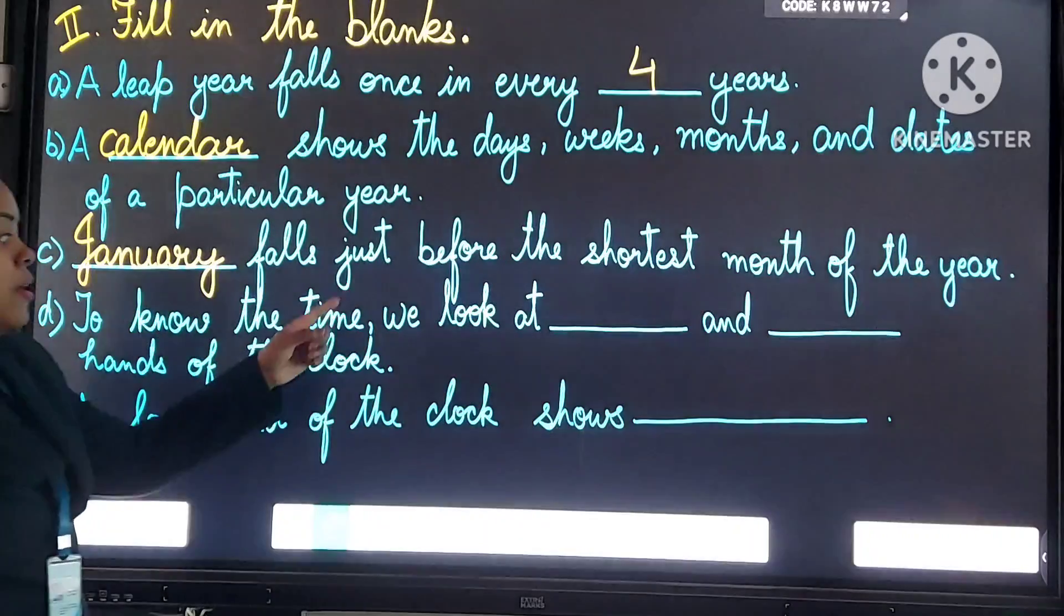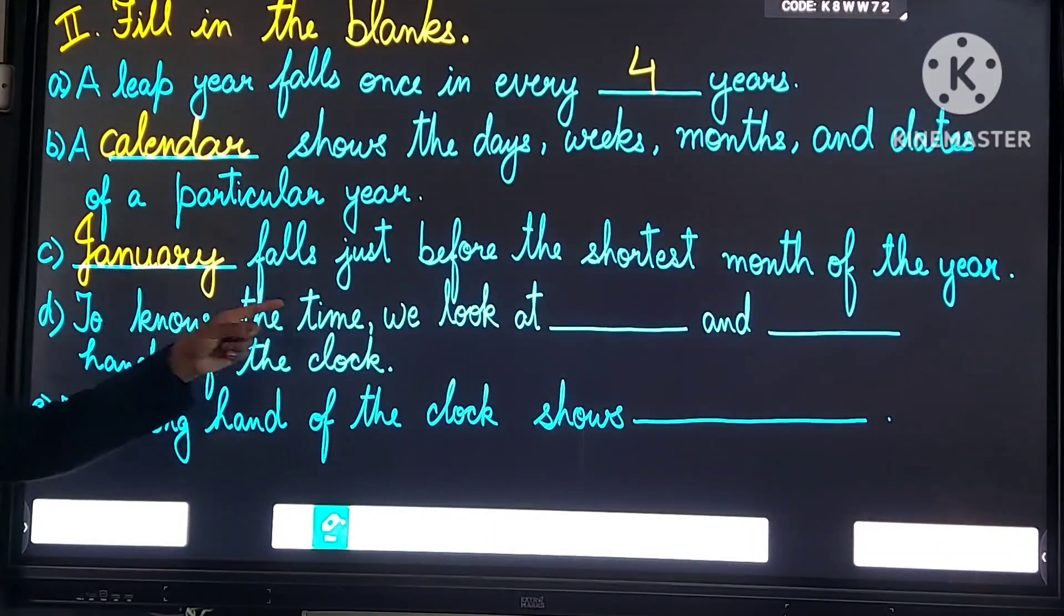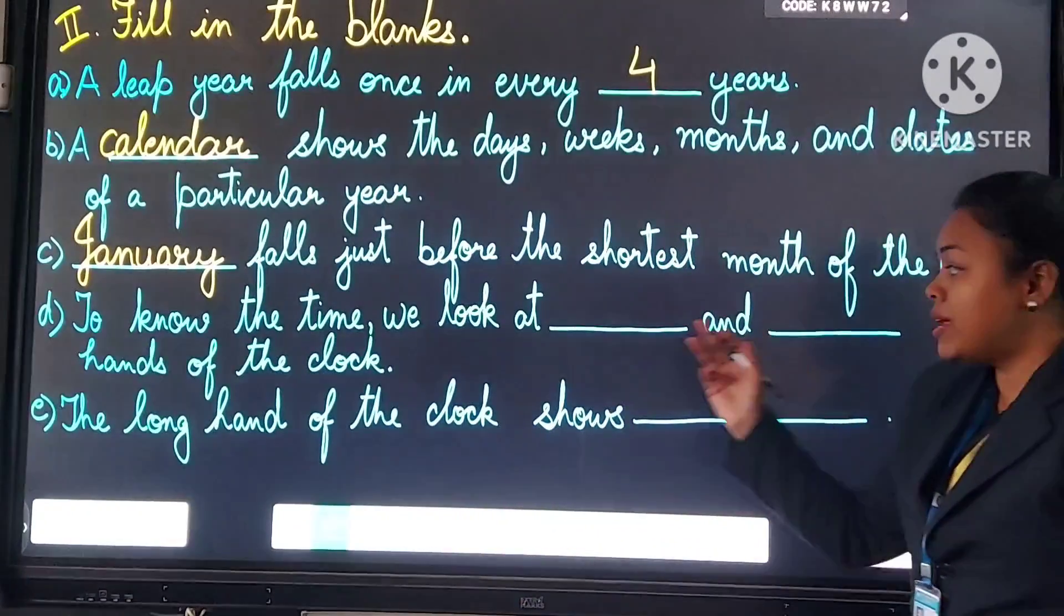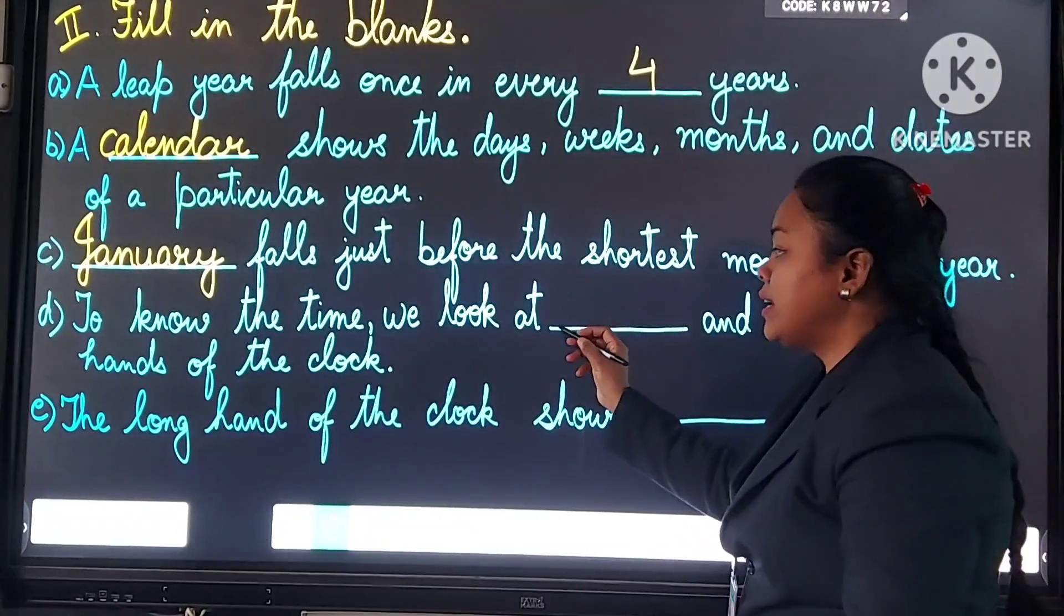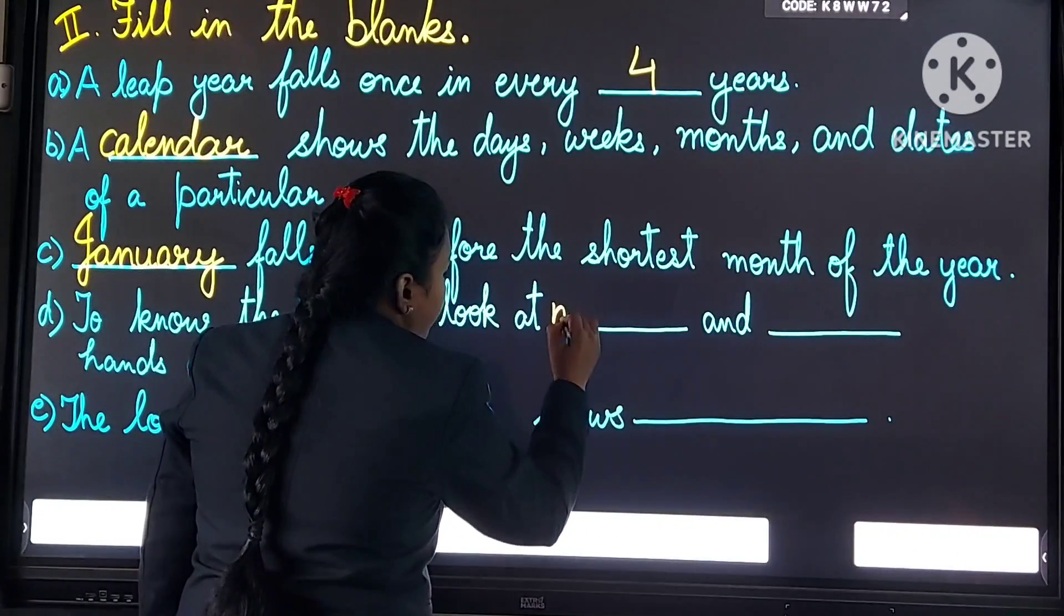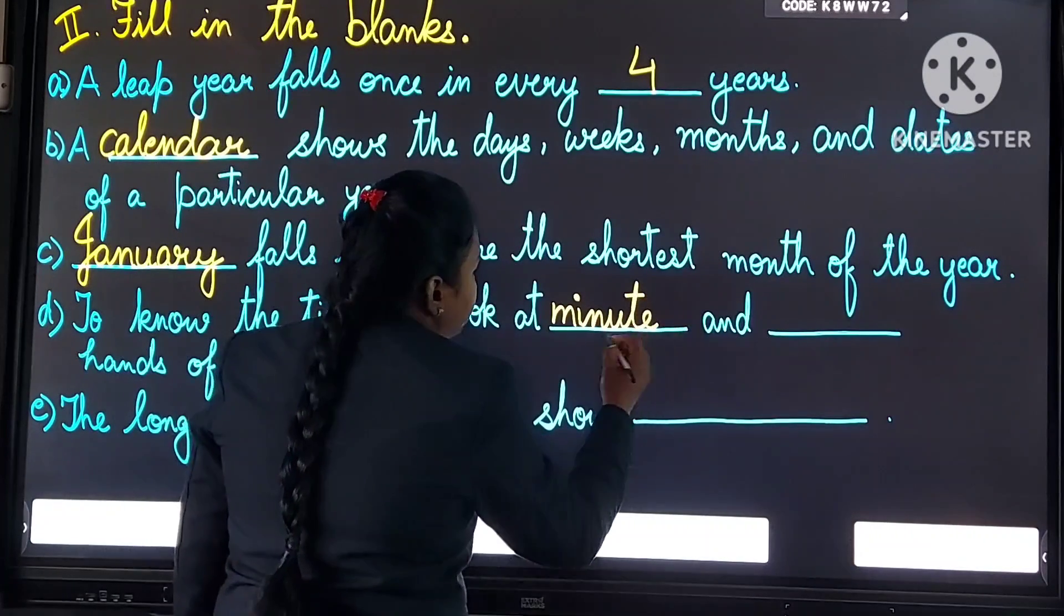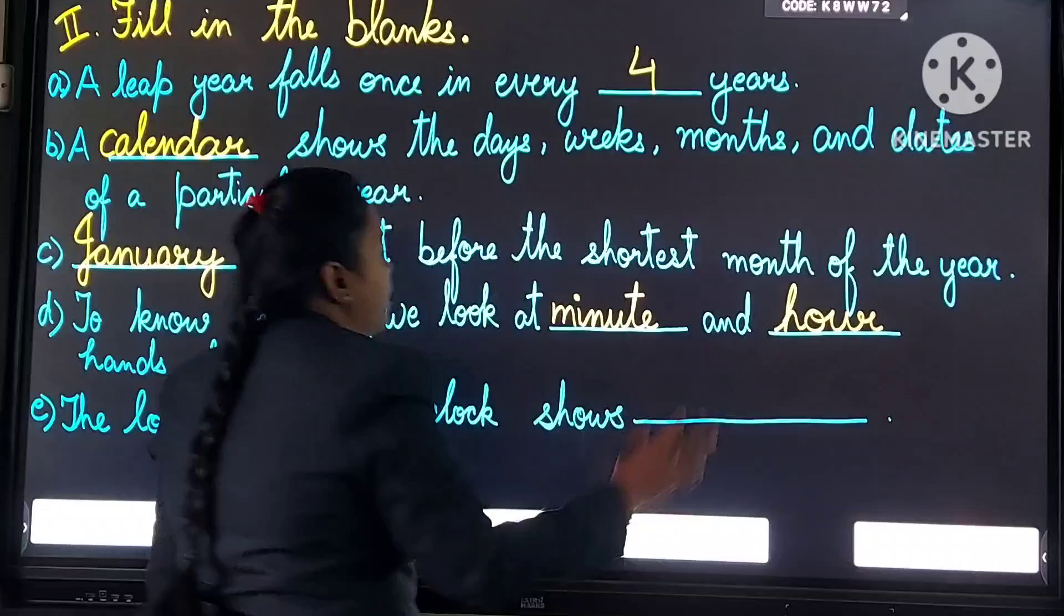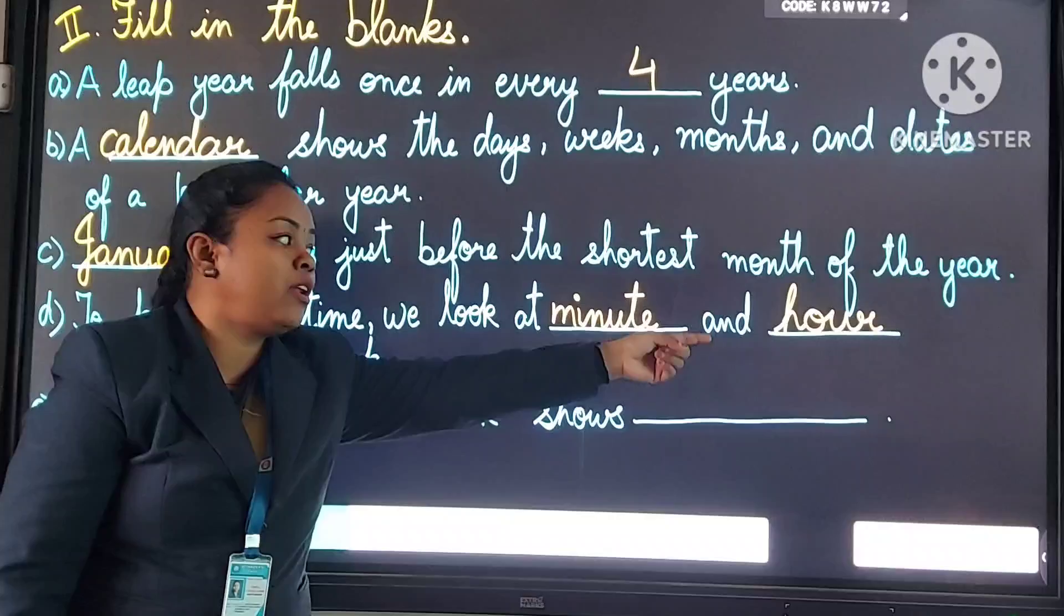Number D. To know the time, we look at dash and dash hands of the clock. Aam luk, hum ghaadi ke time ko jaanne ke liye kya dekhte hai? Minute hand aur hour hands ko. So your answer will be minute and hour hands of the clock. We will write here minute: M-I-N-U-T-E, and hour: H-O-U-R. Hum ghaadi ke time ko jaanne ke liye minute or hour hands ko dekhte hai.